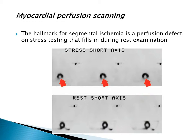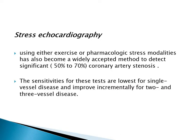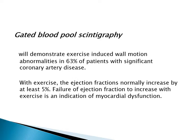Regarding myocardial perfusion scanning, the hallmark for segmental ischemia is a perfusion defect on stress testing that fills in during rest examination. During rest there is filling, while there is a filling defect during stress. Stress echocardiography using exercise or pharmacological stress modalities has become a widely accepted method to detect significant coronary artery stenosis, and sensitivity increases as more vessels are diseased. Gated blood pool scintigraphy demonstrates exercise-induced wall motion abnormality in 63% with significant coronary artery disease. With exercise, the ejection fraction normally increases by at least 5%; failure of ejection fraction to increase with exercise indicates myocardial dysfunction.